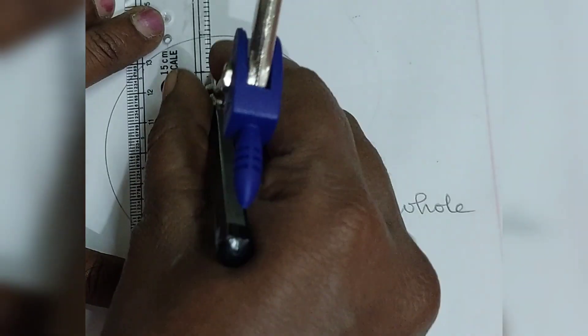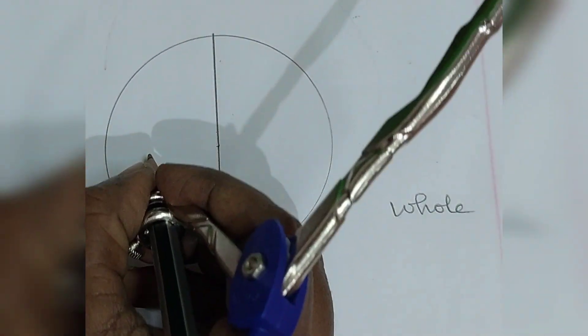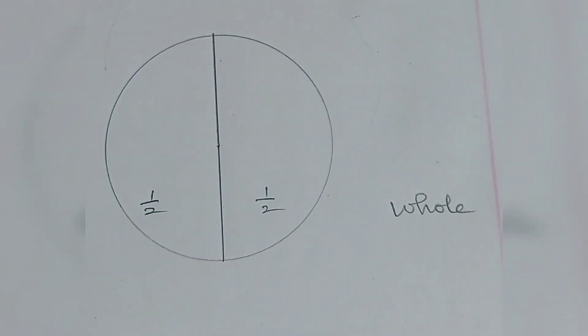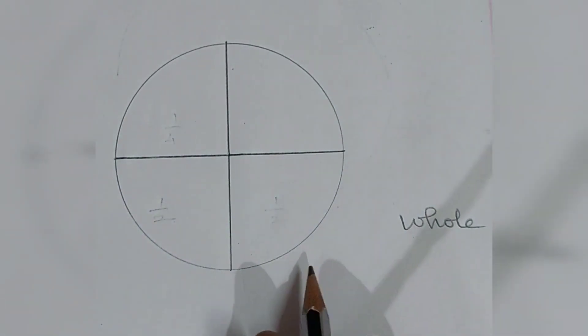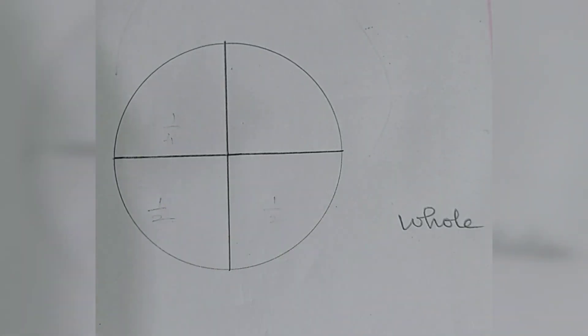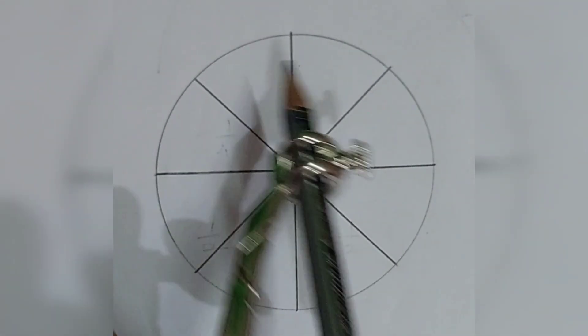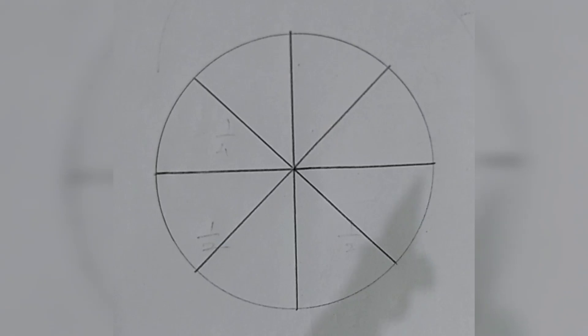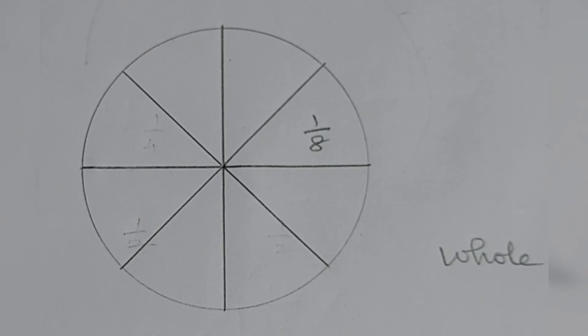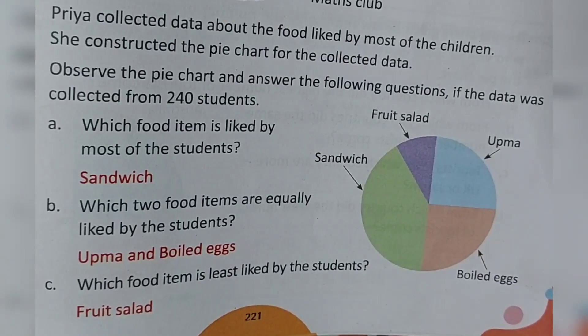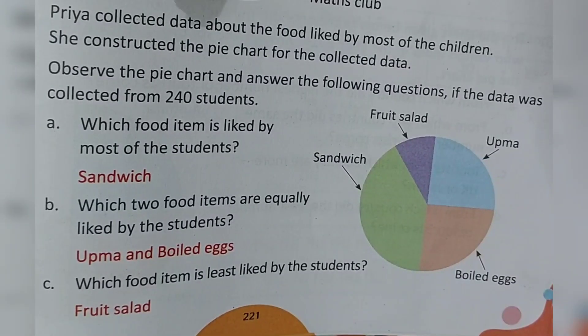This is a circle, so it represents one whole. This is half, and this is another half. Each part represents one by four, that is a quarter. How many parts are there? One, two, three, four, five, six, seven, eight — so eight equal parts are there, and each part represents one eighth. Remember this, children — this will be helpful for drawing the pie chart.